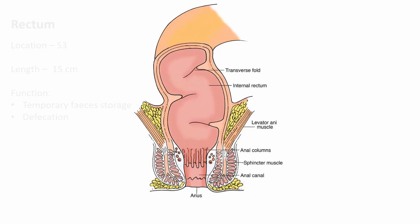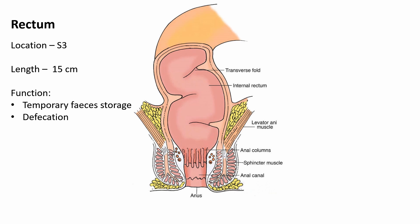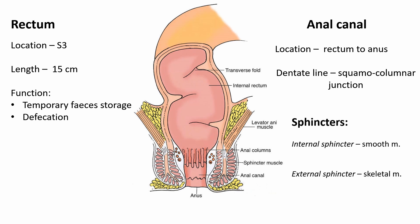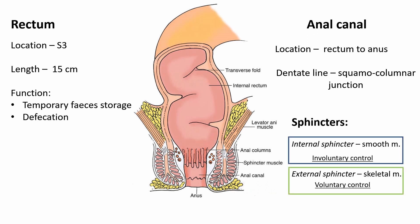The rectum starts at the S3 vertebra and is a 15 cm muscular tube going from the sigmoid colon to the anal canal. It starts intraperitoneal, becomes retroperitoneal as it descends into the pelvic floor and anal canal. Its function is as an expandable organ for temporary storage of feces, allowing movement of fecal matter into the rectum upon defecation. The anal canal originates from the lower level of the rectum and extends to the anus, below the level of the pelvic floor. There is an internal anal sphincter containing smooth muscle responsible for involuntary control, and an external anal sphincter containing skeletal muscle responsible for voluntary control.